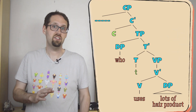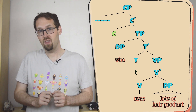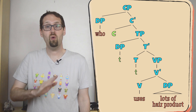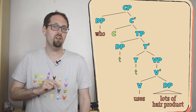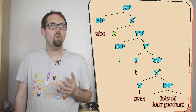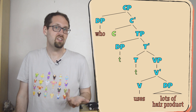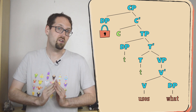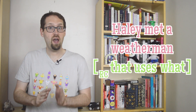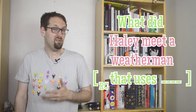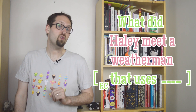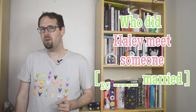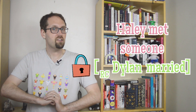Take a look at the relative clause at the end of the sentence: 'Haley met a weatherman who uses lots of hair product.' You can see that that 'who' starts off as its subject and then climbs to the top of the tree like it would in a question. In past episodes, we've pointed out that if you try to ask about something inside the relative clause – say, about what the weatherman uses – you get gibberish. 'What did Haley meet a weatherman who uses' barely sounds like English, even though we can easily say 'what does the weatherman use?' The explanation we gave was that that 'who' at the top of the relative clause blocks any words from getting out.